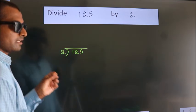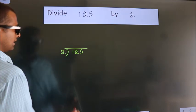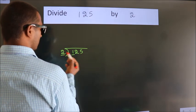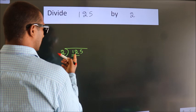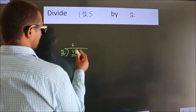This is your step 1. Next. Here we have 1. Here 2. 1 is smaller than 2, so we should take 2 numbers. 12. When do we get 12? In the 2 table. 2, 6, 12.